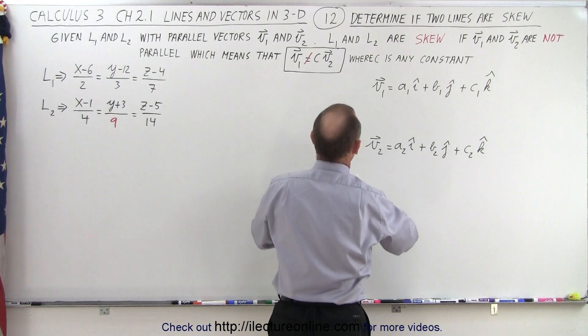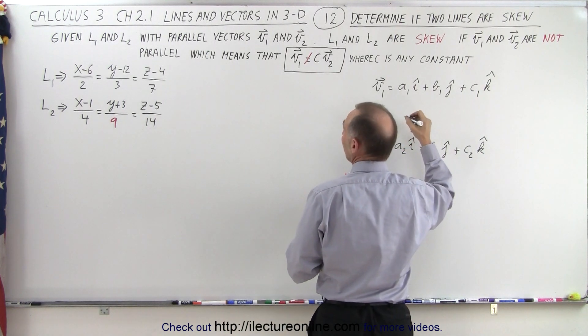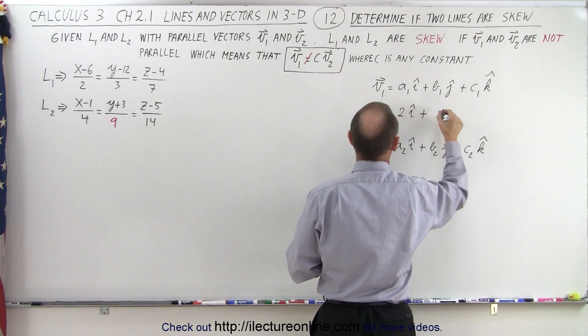So when we plug in the values for V1, we have V1 which is equal to A1 which is 2 in the I direction, plus 3 in the J direction, plus 7 in the K direction.